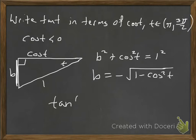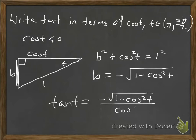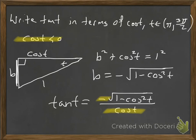So tangent of t is going to be the opposite, which is −√(1 − cos²(t)), all over the adjacent, which is cosine of t. You might look at this and say it's negative, but it's actually going to be positive — because the cosine of t is negative. So this will be negative divided by a negative, which is positive. That's correct, because the tangent should be positive in Quadrant 3.